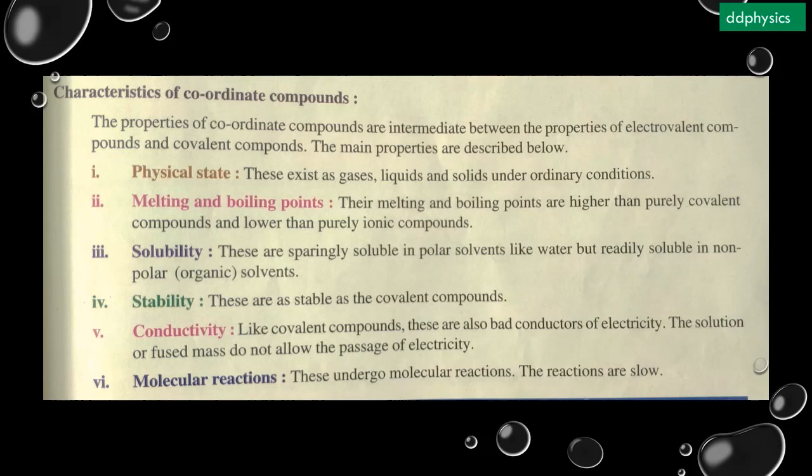So what are the characteristics of coordinate covalent compounds? Physical state: these exist as gases, liquids, and solids under ordinary conditions. Melting and boiling points: their melting and boiling points are higher than purely covalent compounds and lower than purely ionic compounds.